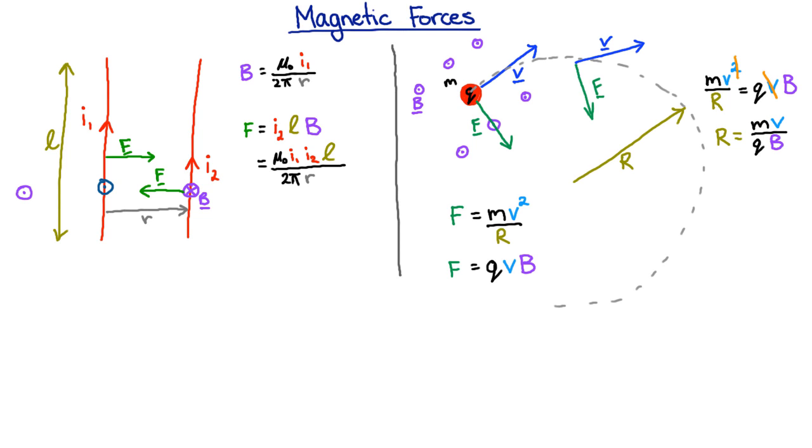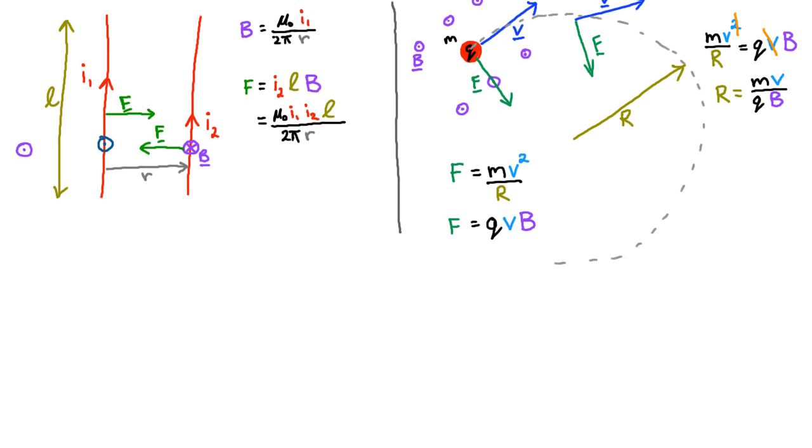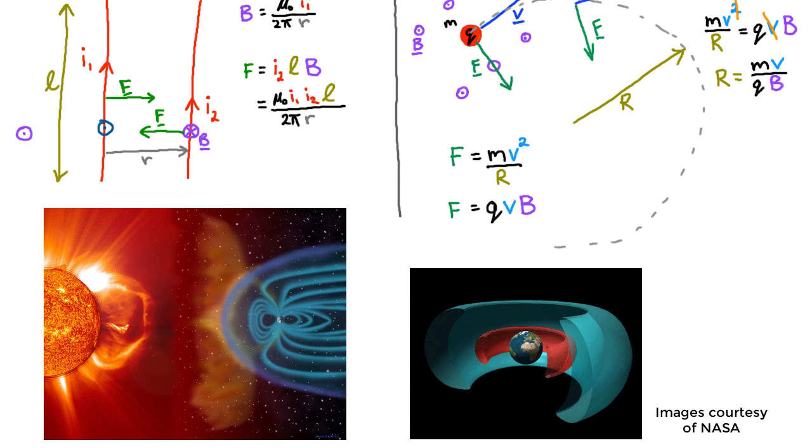So we owe our lives to the fact that the Earth has a very strong magnetic field. If a charged particle comes flying from the Sun as though it was going to hit the Earth, it would hit these magnetic fields, and then they would start spiraling around the magnetic field lines.